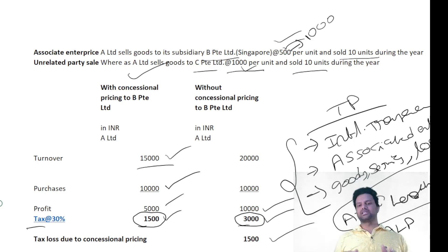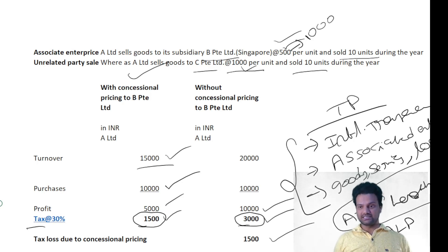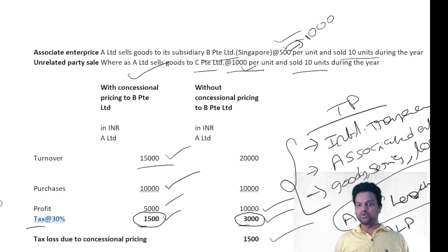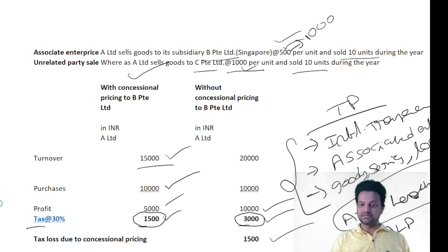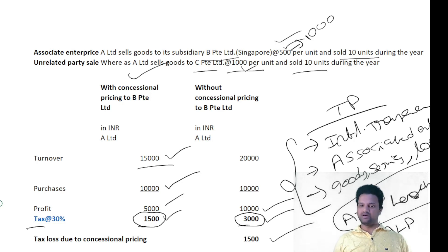These are the basic things of transfer pricing. We will see the definition of international transaction, associated enterprises, and what goods or services are included in the transaction to apply this transfer pricing process. We will also see the methods of computing the Arms Length Price in detail in this chapter. Now let us go to the definitions part.